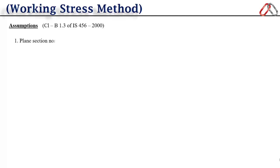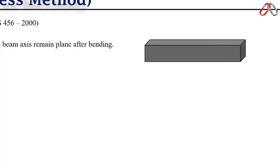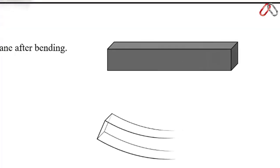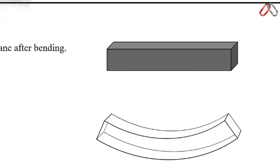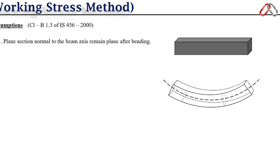Now let's look at the assumptions of the working stress method from IS 456. The first assumption is that plane sections normal to the beam axis remain plane after bending. If you bend any beam sample, the cross-section plane at any location should be normal to the beam neutral axis.